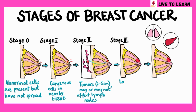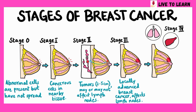Stage 3 involves locally advanced cancer that affects the surrounding lymph nodes. Stage 4 is the final stage in which the cancer has spread to the liver, lungs, or the brain.